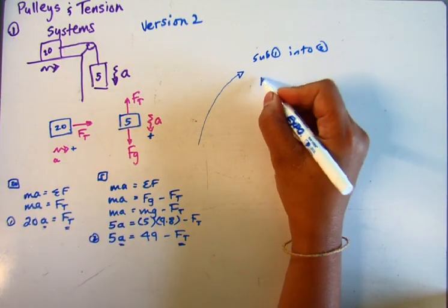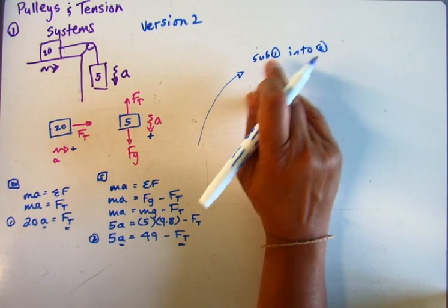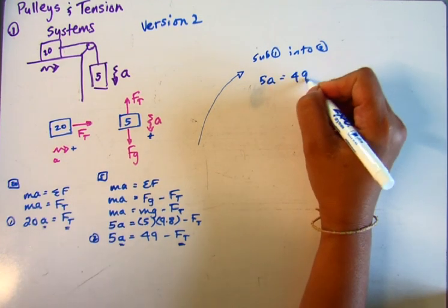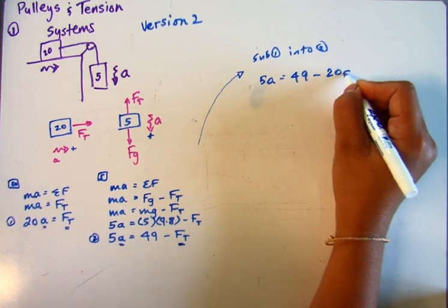Okay, so I get 5A equals 49 minus, instead of Ft, I'm going to say 20A.